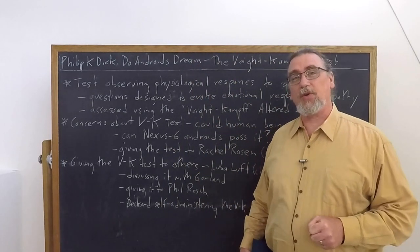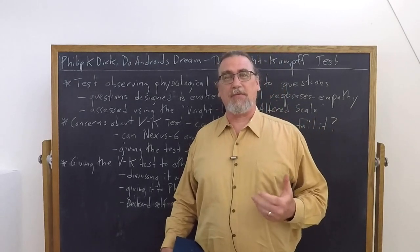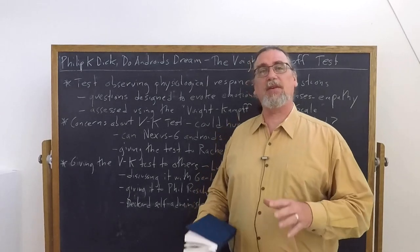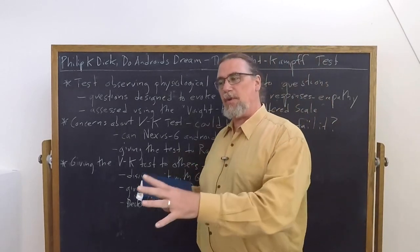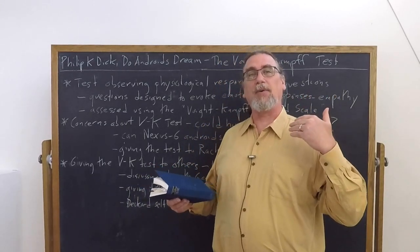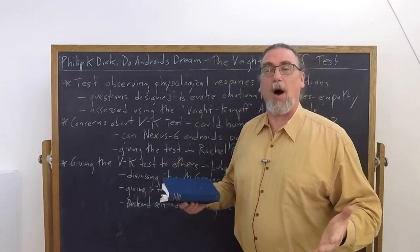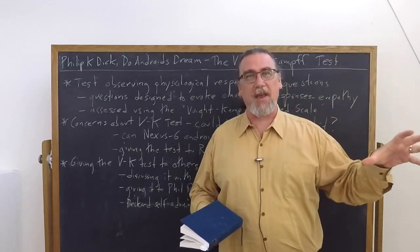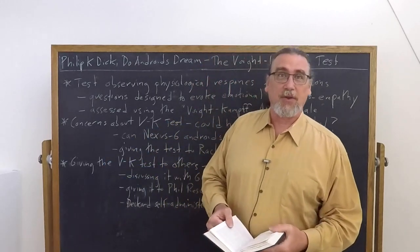One of the important tools that the bounty hunters use in Philip K. Dick's Do Androids Dream of Electric Sheep is a test that is supposed to tell humans apart from androids and therefore allow the bounty hunters to, with great confidence, in fact almost a hundred percent confidence, say that this thing is an android and can be retired or killed and this is a person and we cannot do that to it.